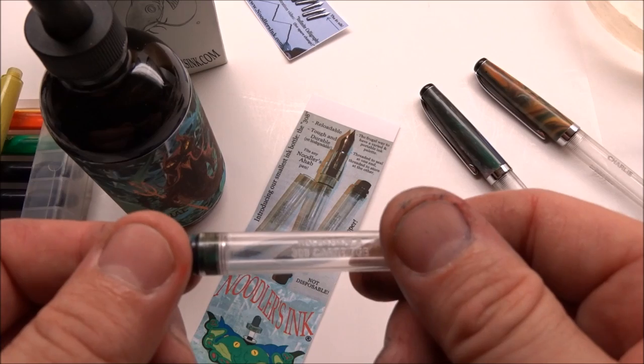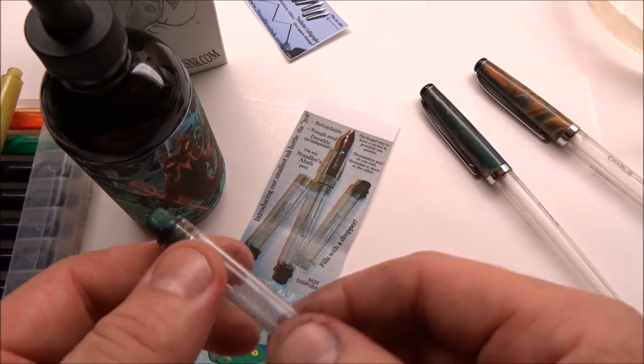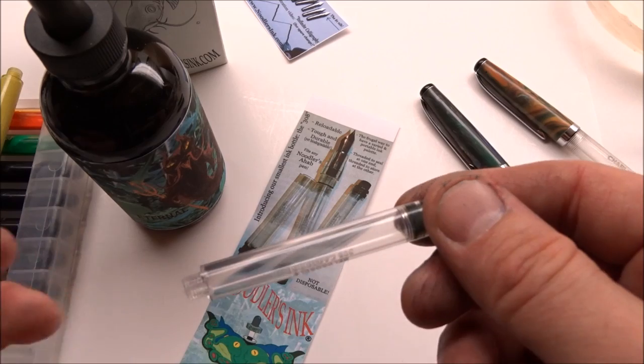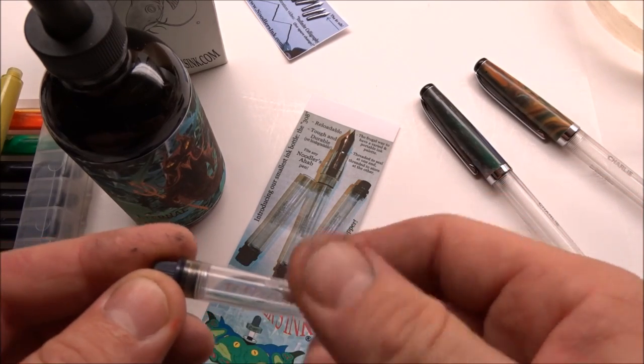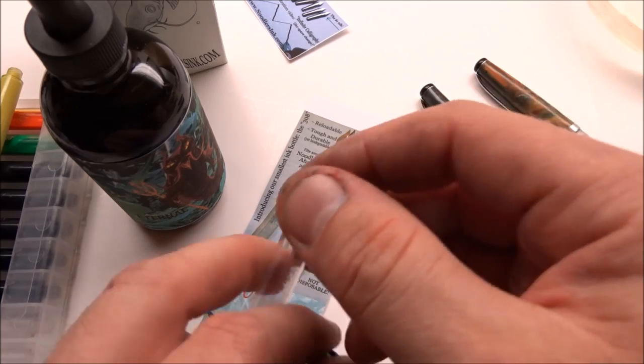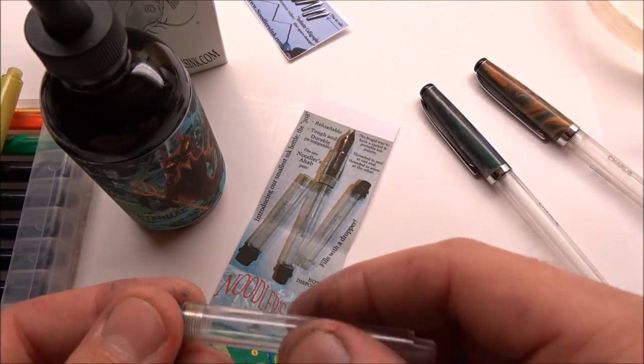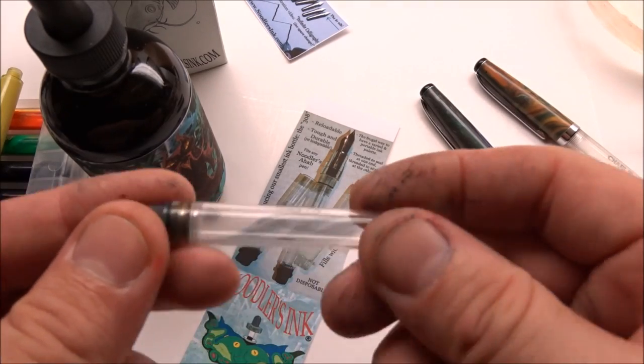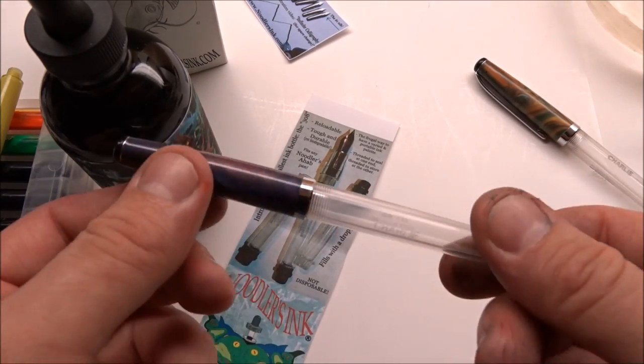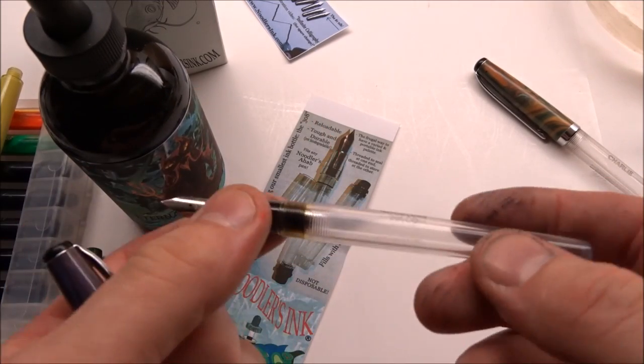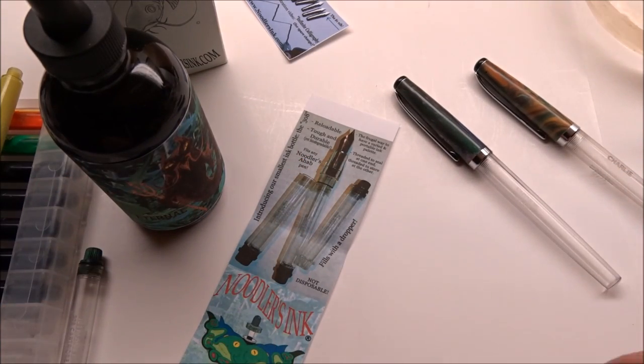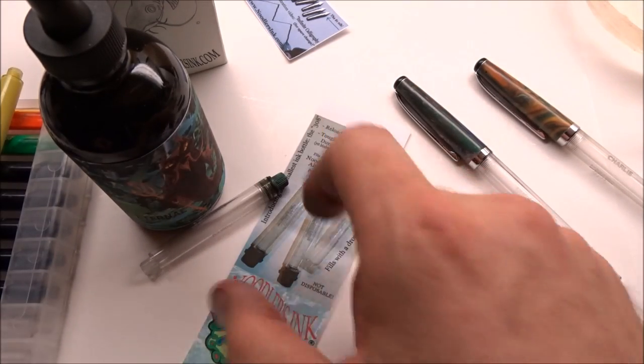This is somewhat of a throwback. The first cartridge comes from the prior century, the 19th century, from the Eagle Pencil Company. They had a fountain pen that had a glass refillable, reloadable cartridge that used to have a cork on the front. You'd remove the cork and insert it into the section. This design is made out of a durable plastic, a biodegradable plastic. It's the same plastic that the Charlie pen is made out of.